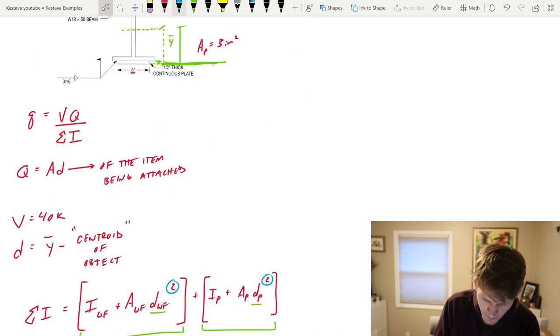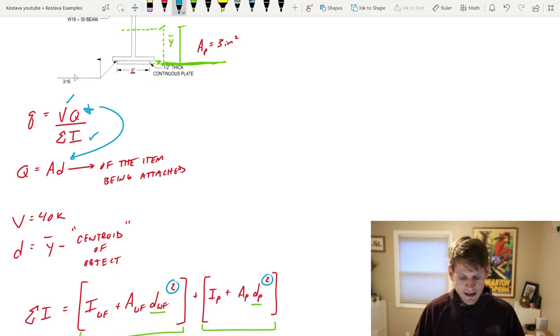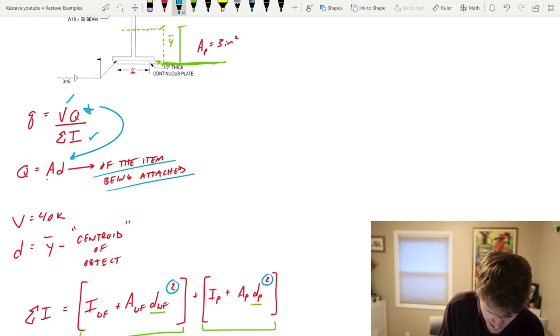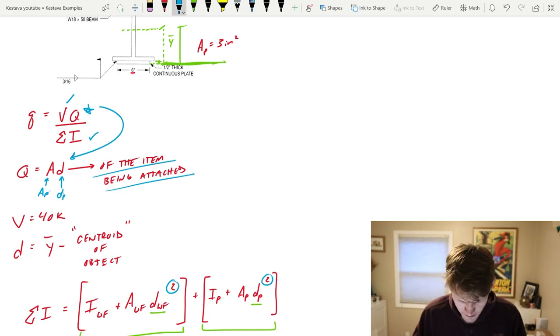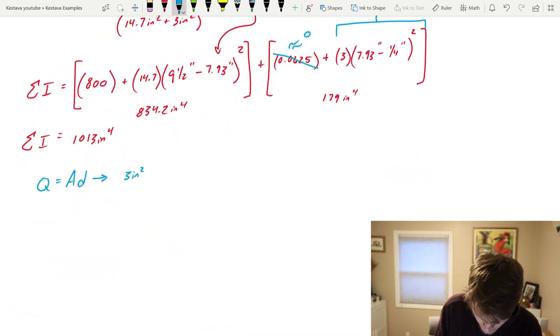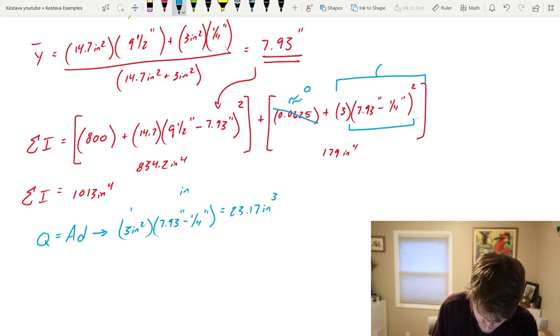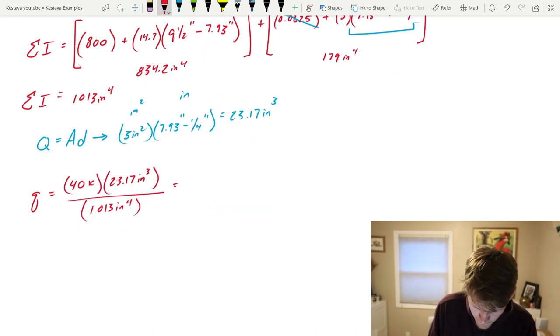We're back at the top. We have summation I, we have V. Now we need Q and Q is A times D, and this is my hint to myself of the item being attached. So that means it's A of the plate, AP, and it's DP. So let's find Q: three inches squared and your d, you already solved that, plug in the same thing here, and that spits out 23.17 inches cubed because this is inches, this is inches squared being multiplied together.